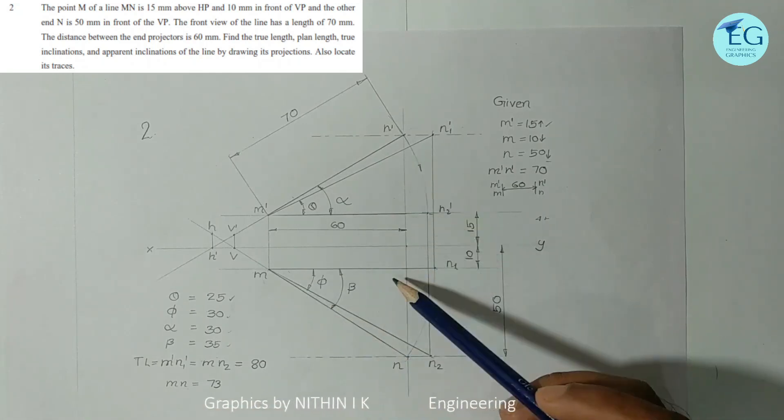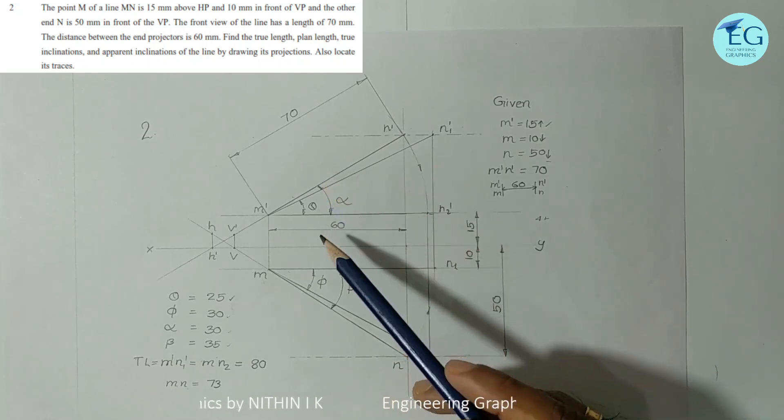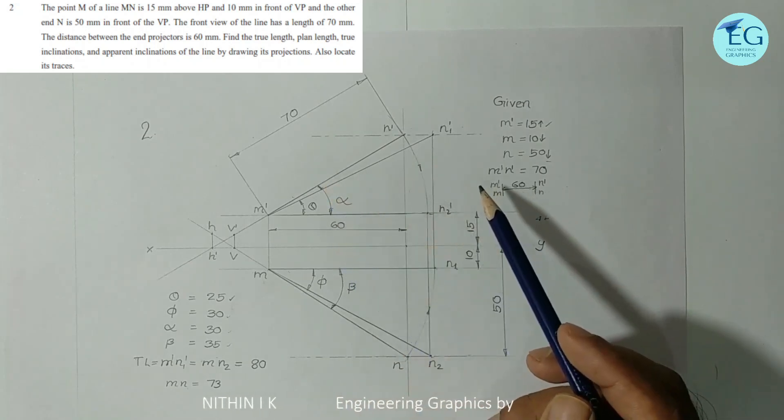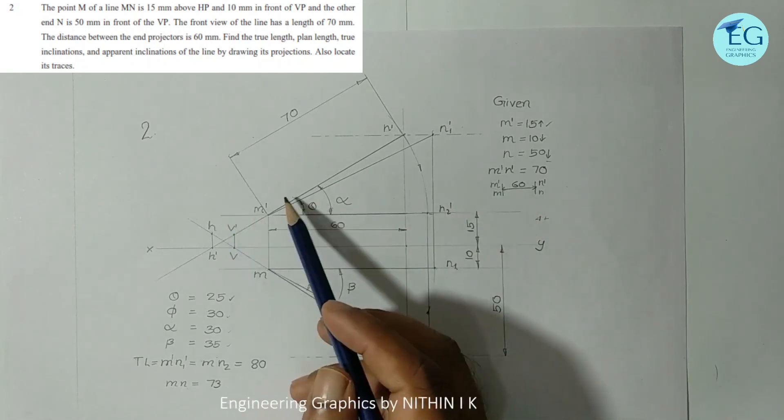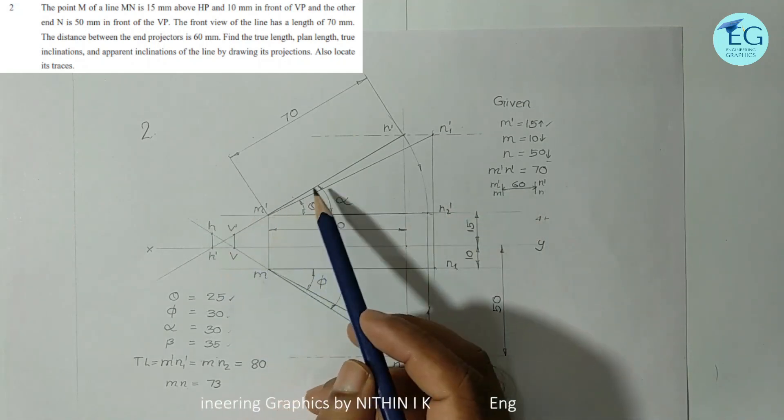Anyway to find the true length I am going to rotate. I will use rotating plane method. Then the rest of the 3 to 4 marks. The rest of the mark is neatness and dimension and trace locating.